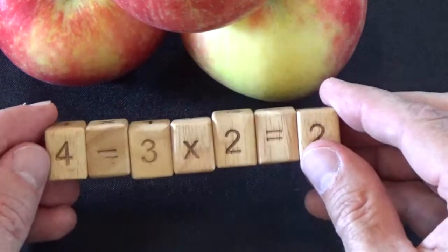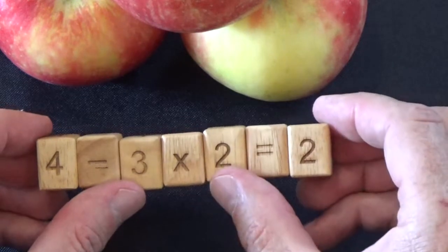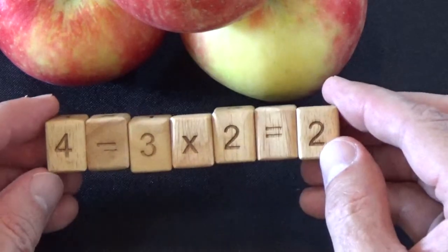If we flip it this way, 4 minus 3 is 1 times 2 equals 2. That is a correct equation.